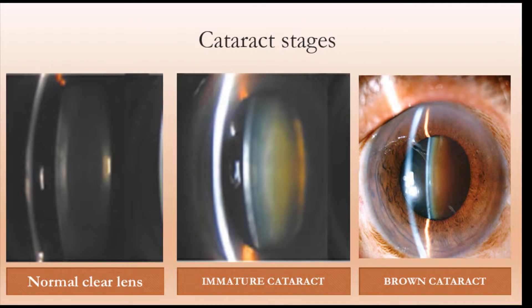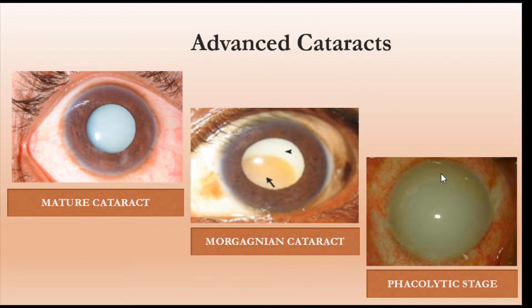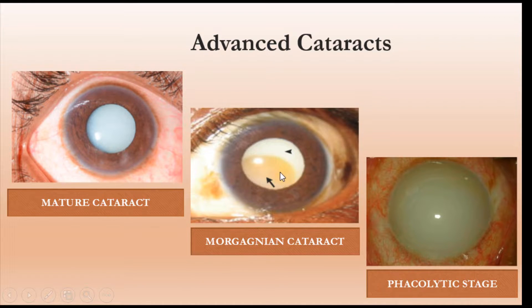A normal clear lens looks like this in a slit lamp view. As age increases and the cataract develops, it becomes hazy especially in the center — we call it nucleus sclerosis — and it can become as bad as turning brown. This is a very advanced stage of cataract. We also have stages where you have a fully white lens, which we call a mature cataract. If left without operating, it progresses to a Morgagnian stage where the cortex becomes very liquefied and the central nucleus has sunken down.